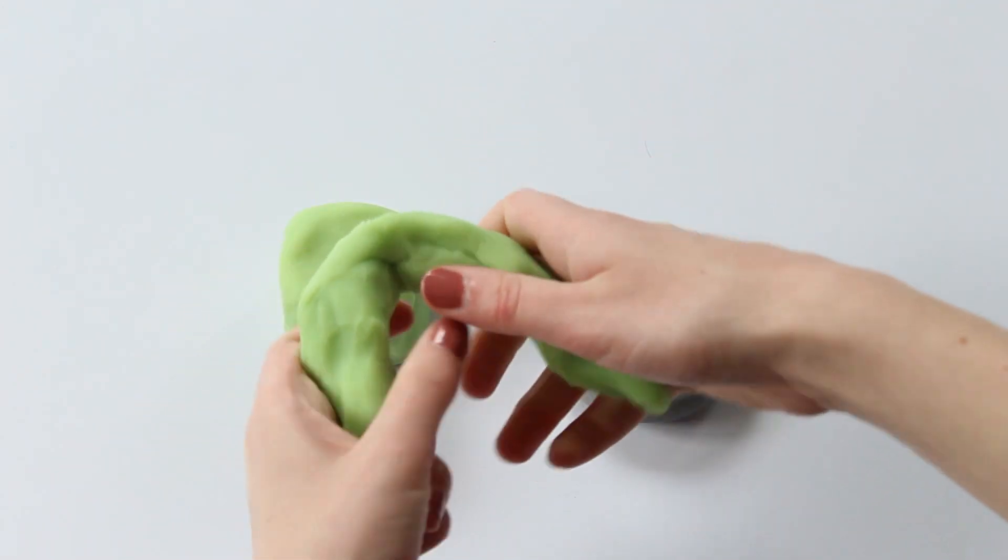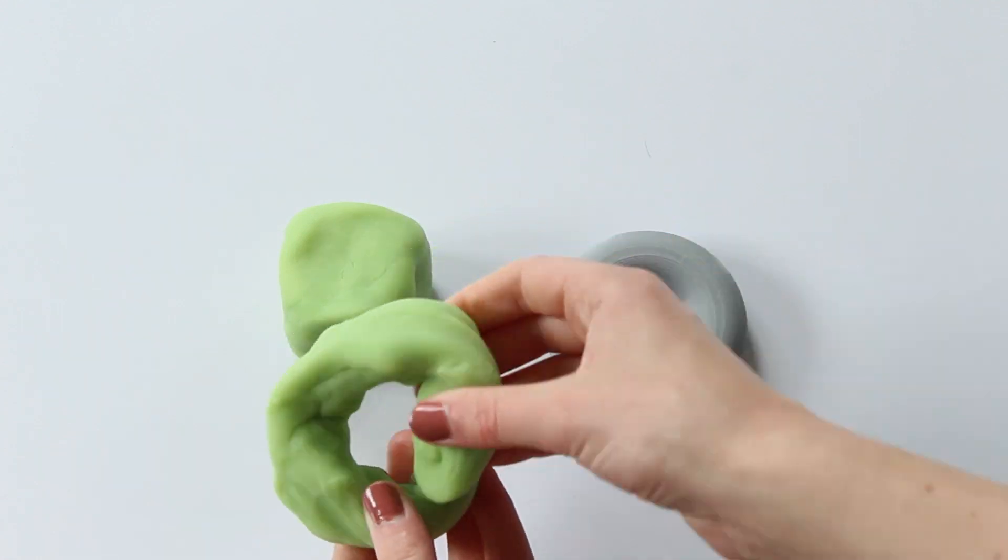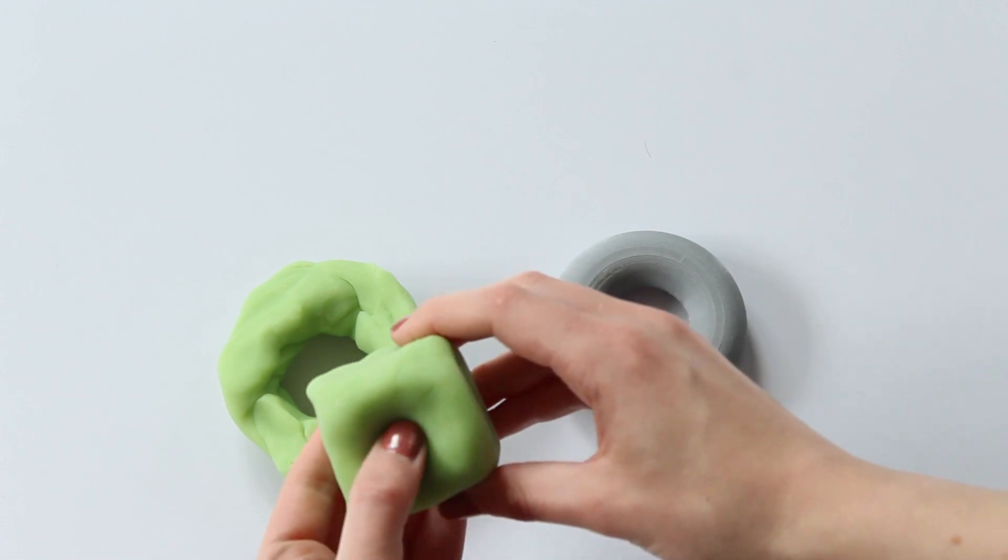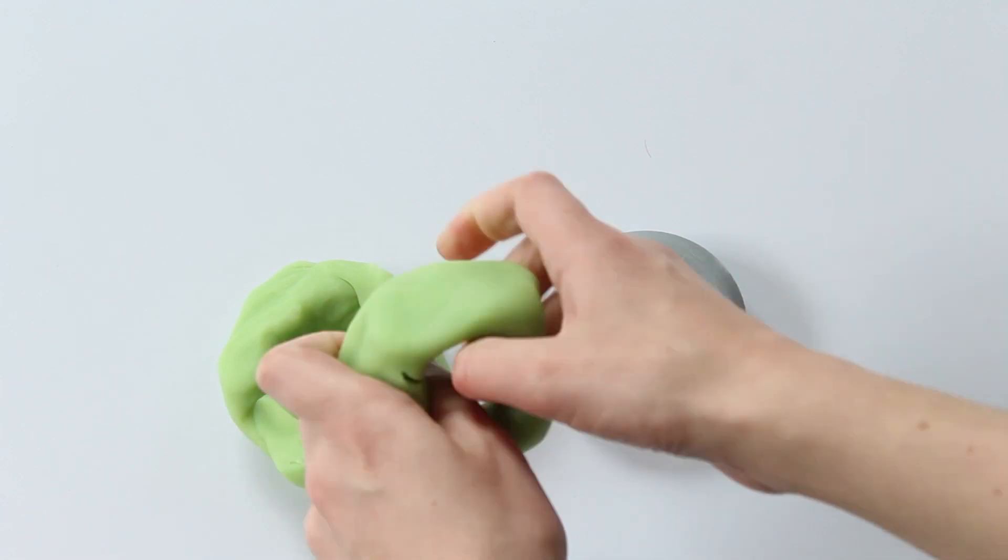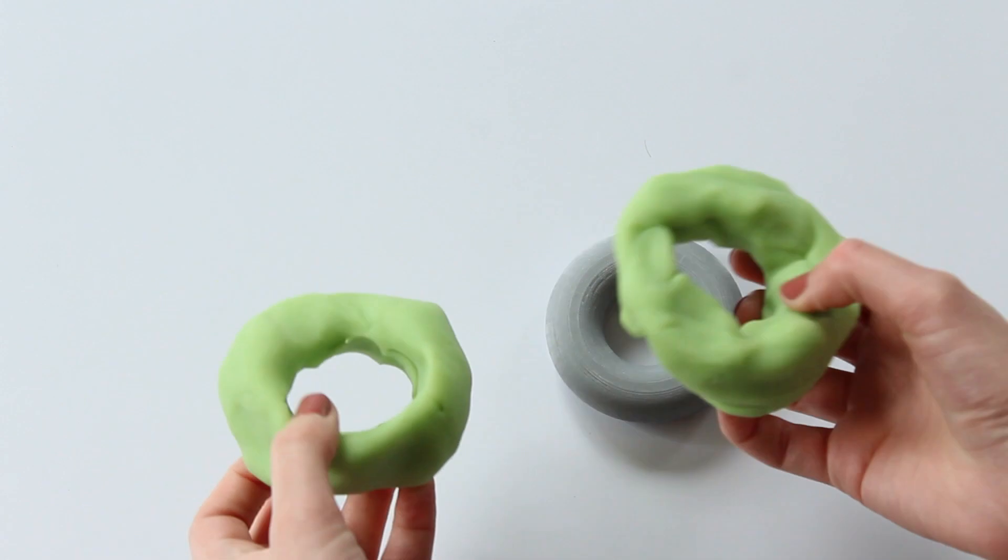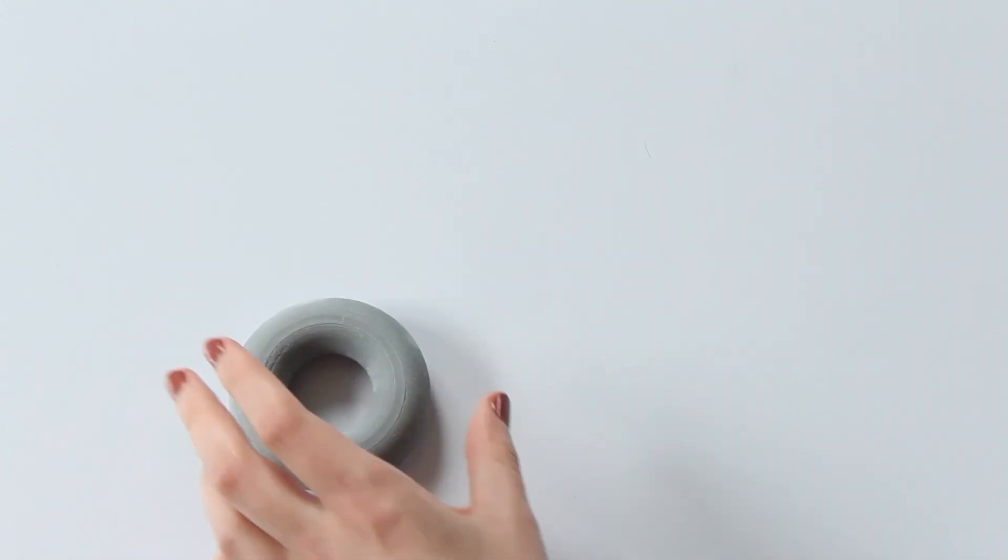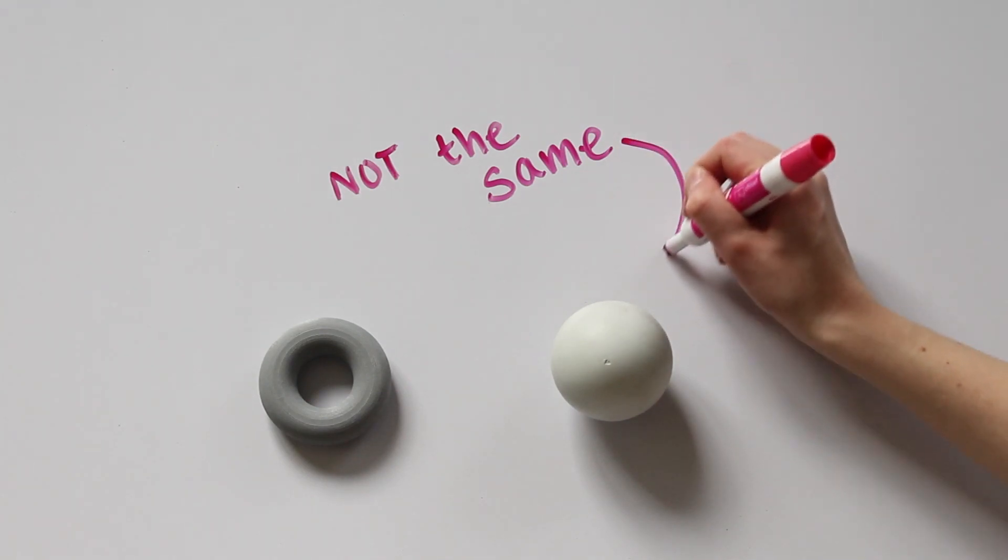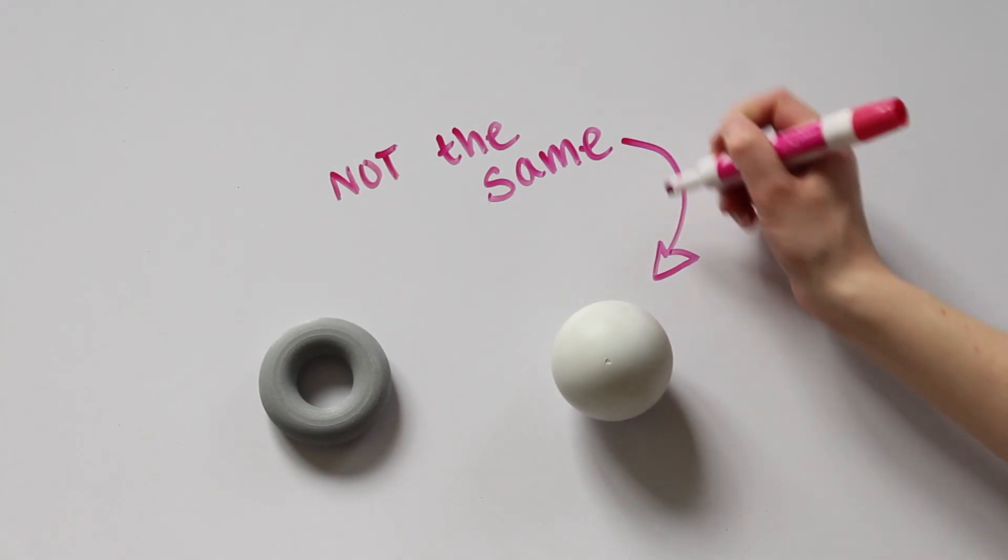I would either have to stretch the sphere into a log and then glue the ends together, or punch a hole in the middle of the sphere. Neither of these actions are allowed with continuous deformation. This means that the sphere and the torus are fundamentally different, and that difference lies in the hole.